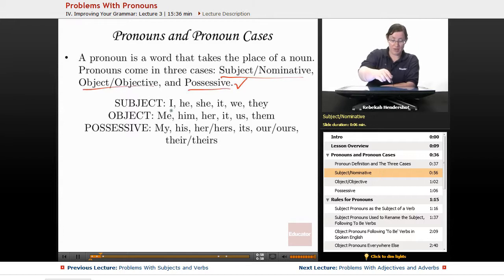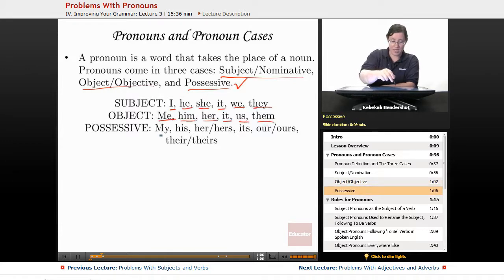Some examples of subject pronouns are I, he, she, it, we, and they. Object pronouns: me, him, her, it, us, and them. Possessive: my and mine, his, her and hers, its, our and ours, and their and theirs.